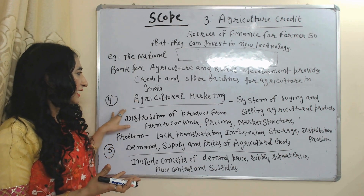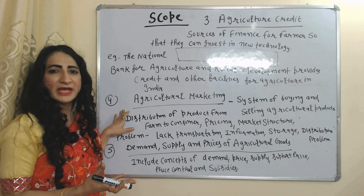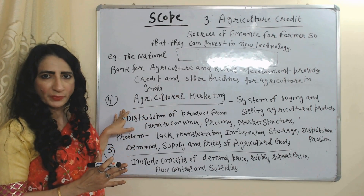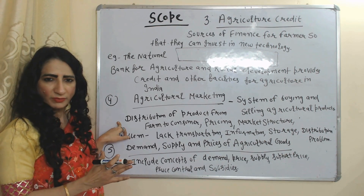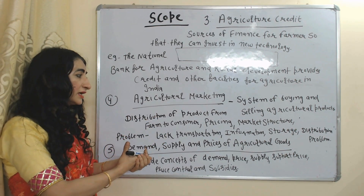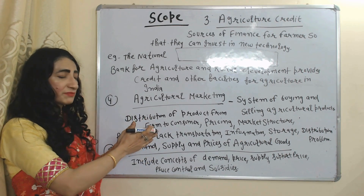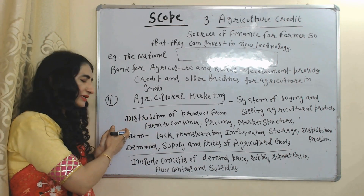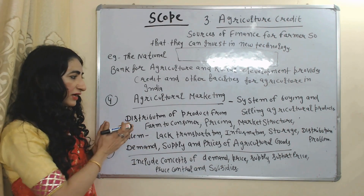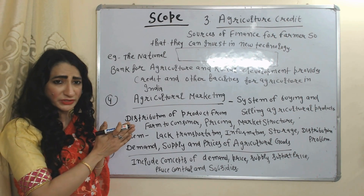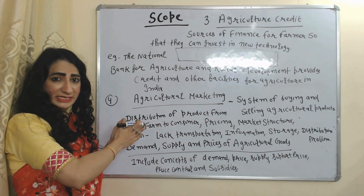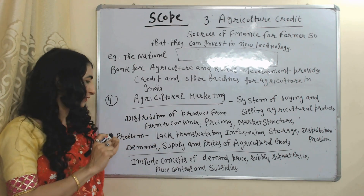Agricultural marketing is a system of buying and selling agricultural products. Agricultural economics studies the distribution of products from farm to consumer, pricing, and market structure. It also studies problems of agricultural marketing such as lack of transportation, lack of information, lack of storage, and distribution problems, and suggests solutions for all of these.